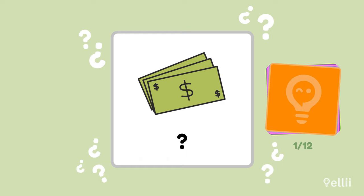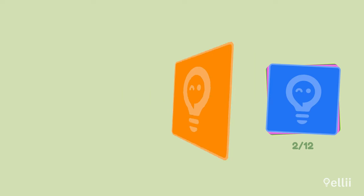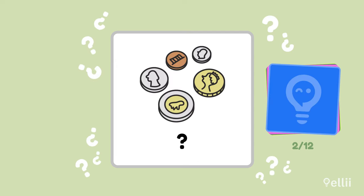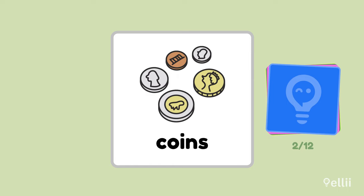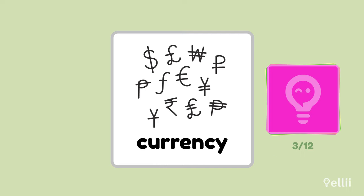Do you know what these are called? Bills. Are bills green or different colors in your country? And what are these? Coins. Your purse or pockets can get really heavy when you're carrying a lot of coins around. What is the word for the monetary system a country uses? Currency. Examples of currency are the Japanese yen and the British pound.